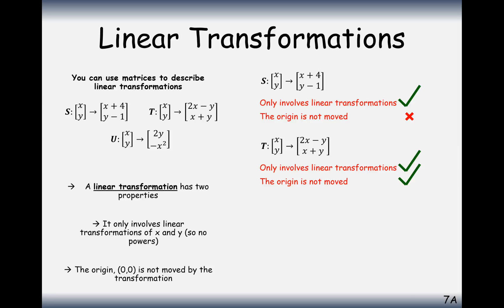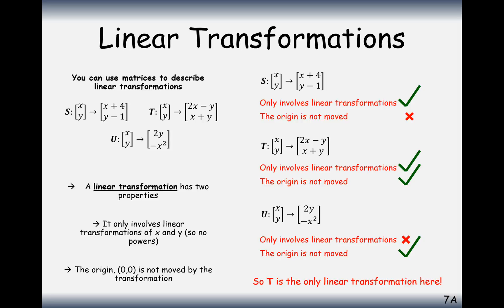Transformation T abides by both rules for a linear transformation: there are no powers of x and it doesn't move the (0, 0) coordinate. For transformation U, it does involve powers of x — the (0, 0) coordinate doesn't move, but that doesn't matter. U is not a linear transformation either. So it's only T that we can represent by a matrix.